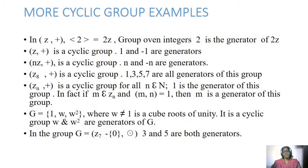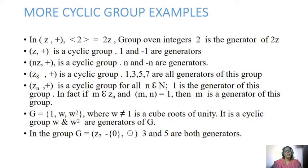A few more examples: in 2Z under addition, 2 is the generator. Z under addition is a cyclic group, and the generators are 1 and -1. More generally, Zₙ under addition is a cyclic group where N and -N are generators. And Zₙ has many generators — 1, 3, 5, 7 are all generators of this group.